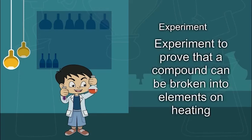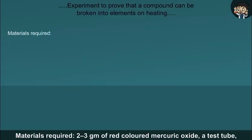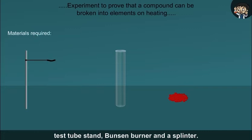Experiment to prove that a compound can be broken into elements on heating. Materials required: 2-3 grams of red colored mercuric oxide, a test tube, test tube stand, Bunsen burner and a splinter.